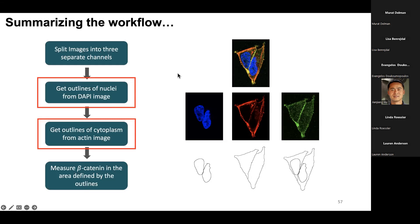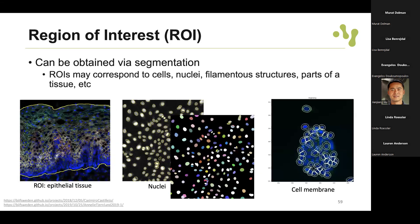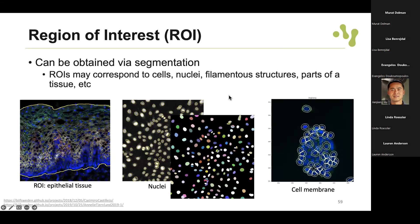How do we get these outlines - our regions of interest or ROIs? We can annotate them manually in Fiji using different annotation tools and the ROI manager, where for each annotated object you can measure intensity, shape, and so on. But they can also be obtained via automated segmentation - in a large image or large dataset you cannot do this manually, and it's also less biased. ROIs can be for instance part of a tissue, nuclei, cell membrane, or a ring shape around the cell membrane to quantify intensity there. ROIs can have different shapes.